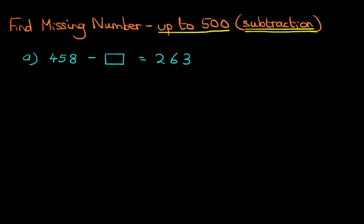458 minus something equals 263. It looks quite difficult, doesn't it? Now, the most important thing here is to know how to reorder the question. Our objective is to get the missing number on one side of the equal sign and the numbers on the other side. So what we're going to do is take the box and swap it with the number on the right-hand side.